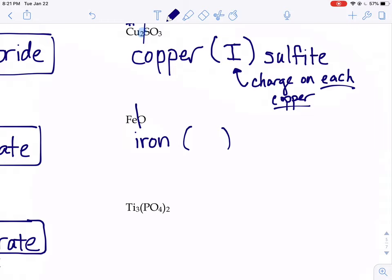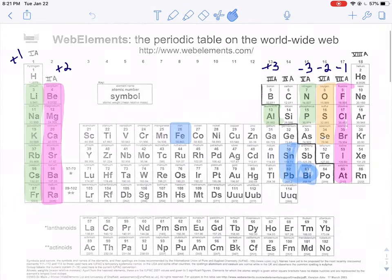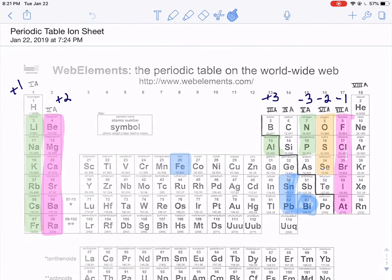The way we're going to figure out what the Roman numeral is is by looking at that non-metal portion. That non-metal portion is just O. That's it. So O, we need to figure out what the charge of just O would be. We'd have a charge of negative 2.